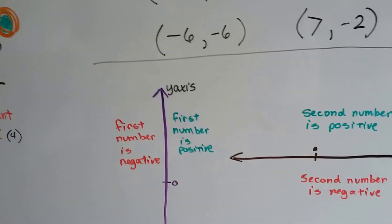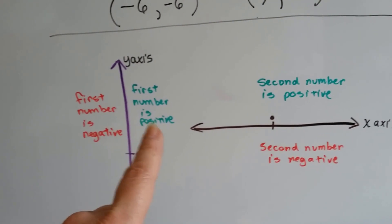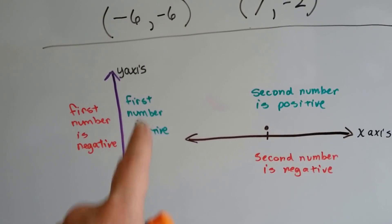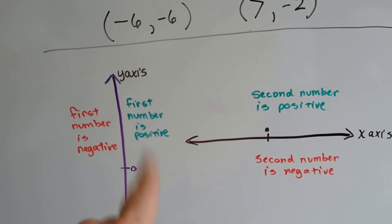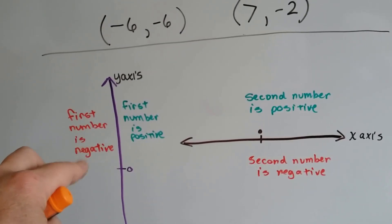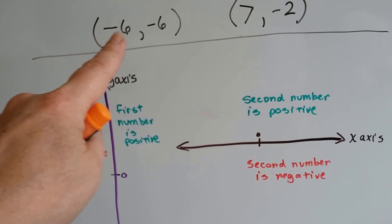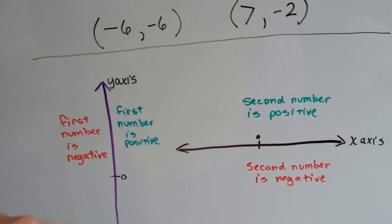On the y-axis, if a number is on this side of the y-axis, on the right side of it, the first number, then it's going to be a positive number. If the first number is a negative number, it's going to be on this side. We can already tell this one, the first number is a negative number. So, it's going to be somewhere on this side of the y-axis.